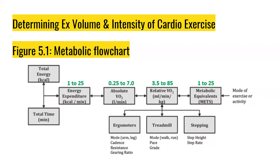When going through your calculations, be aware of the values shown in green — they indicate the expected range your results should fall within. For relative VO2, the value should be between 3.5 and 85 mL/min/kg. For absolute VO2, it should be between 0.25 and 7.0 L/min. If your calculated value falls outside these ranges, something went wrong in your calculations and you should go back to check your numbers.